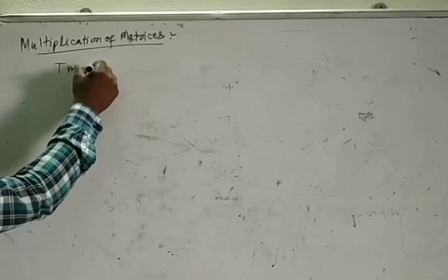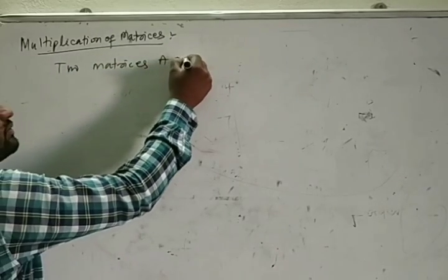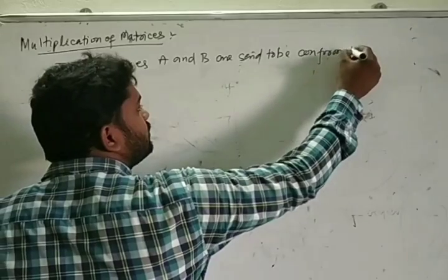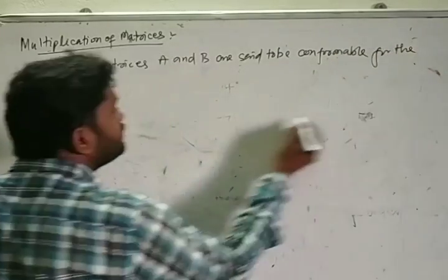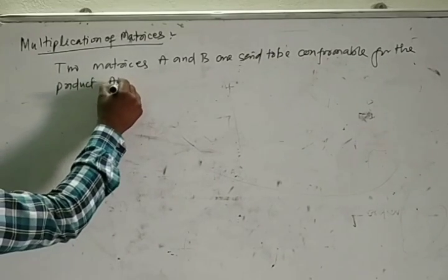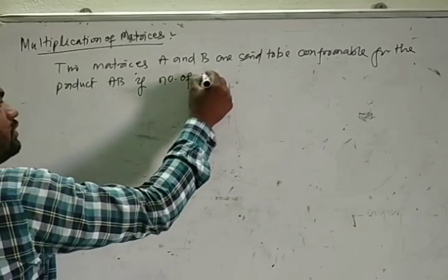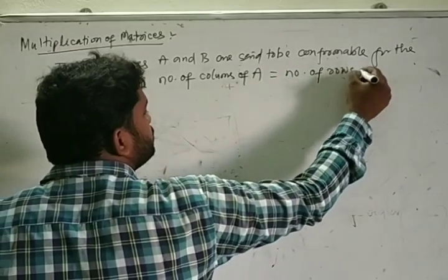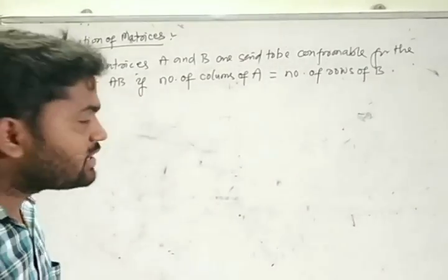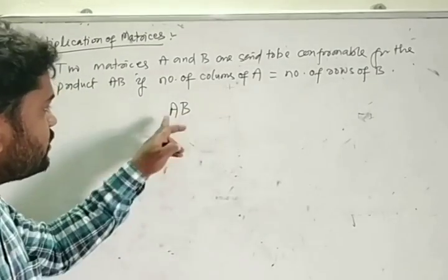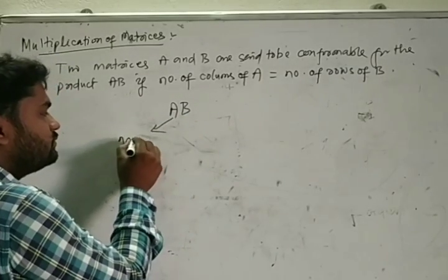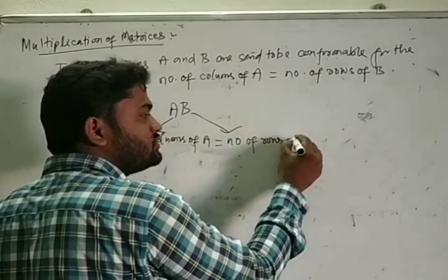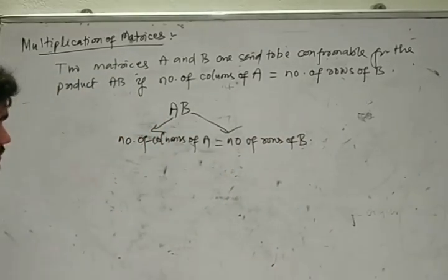Two matrices A and B are said to be conformable, or possible for the product AB, if the number of columns of A is equal to the number of rows of B. So the product AB is possible when the number of columns of A equals the number of rows of B.